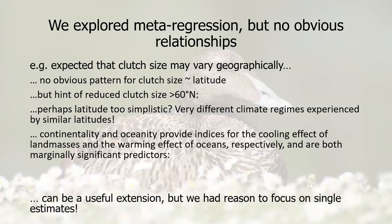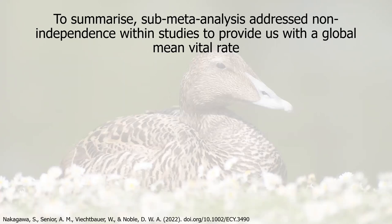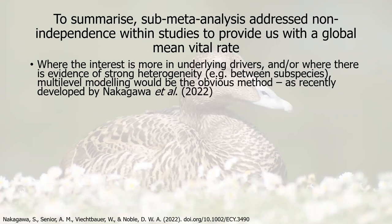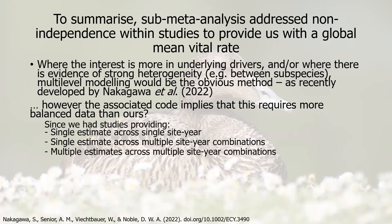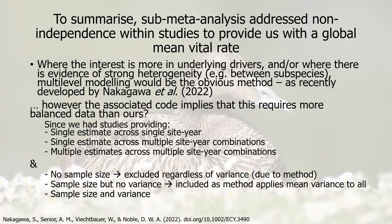This sort of meta-regression can be a useful extension, but for us we had reason to focus on single estimates because we were trying to parameterise our population models for further analysis. To summarise: sub-meta-analysis addresses non-independence within studies to provide a global mean vital rate. Where the interest is more in underlying drivers, or where there is evidence of strong heterogeneity such as between species, multi-level modelling would be the obvious method as recently developed by Nakagawa and colleagues. Our data includes studies providing a single estimate across a single site-year, a single estimate representing a mean across multiple site-year combinations, and multiple estimates across multiple site-year combinations on which we conducted our sub-meta-analysis — as well as some with no sample sizes, some with sample size but no variance handled by our method, and some with both sample size and variance. Overall it's a really big mixture of data, which we think is probably typical of demographic datasets.